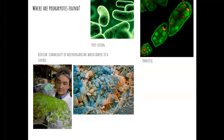Prokaryotes can also be parasitic, so they live inside of other organisms or inside the cells of other organisms. And they can appear as what we call a biofilm — a community of microorganisms that adhere to a surface. When you wake up in the morning and you have a film on your teeth, that is a community of several different species of bacteria that have created a livable environment on your teeth.